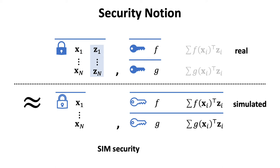The solid lock and key on the upper row refer to the real ciphertext and secret key. The hollow lock and key on the lower row refer to the simulated ciphertext and secret key. We note that decrypting the simulated ciphertext using the simulated key gives the value embedded in the key.